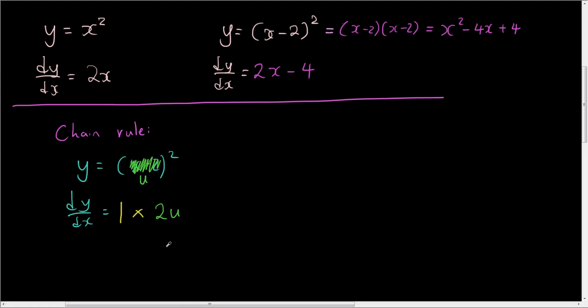Okay, so now what you are going to do, is you are going to change the u back to x minus 2. So it is 2 times u, u is x minus 2, right? So it is 2 times (x - 2). And that is how you differentiate it.